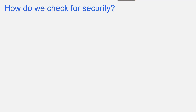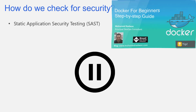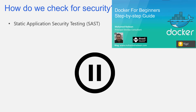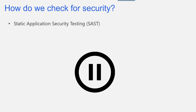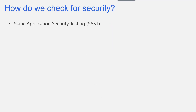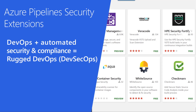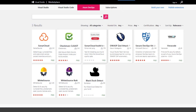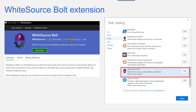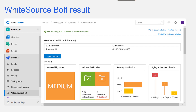We check for vulnerabilities in source code or libraries by running static application security testing (SAST). This can be done by different software vendors. On the Azure Pipeline Marketplace, we can see different vendors providing SAST extensions — for example, BlackDuck, WhiteSource, WhiteSource Bolt, Checkmarx, Veracode, and many others. The extension we will be using in this video is WhiteSource Bolt.